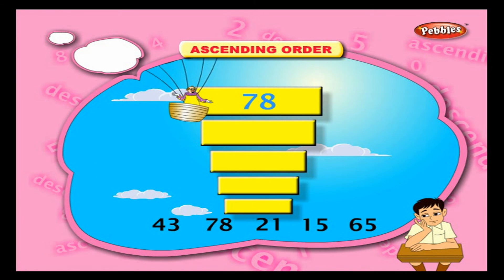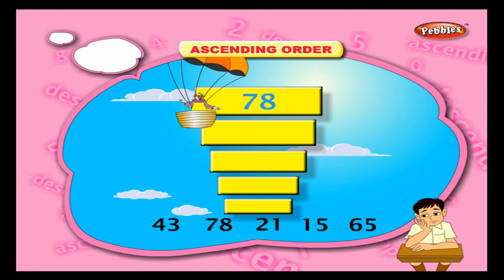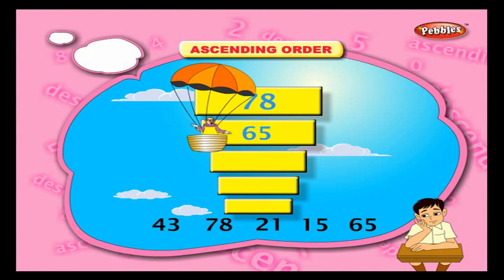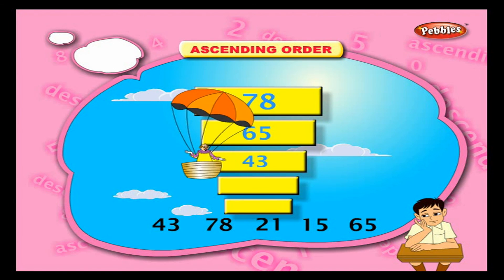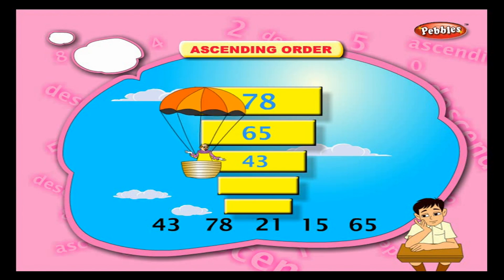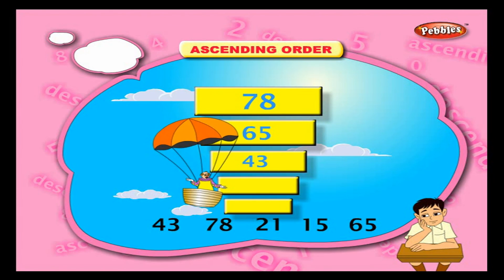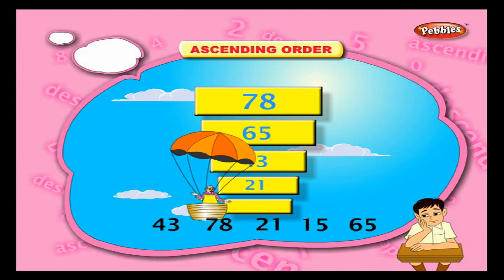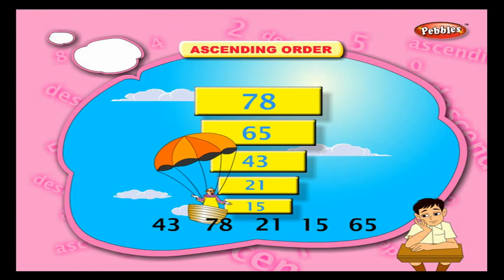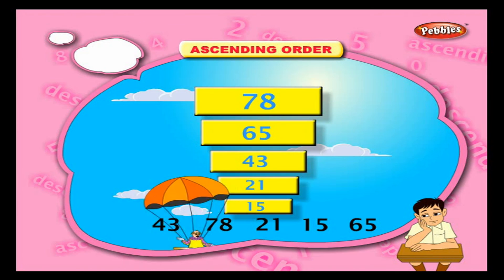78 is the greatest with seven tens and eight ones. Next comes 65 with six tens and five ones. Then 43 with four tens and three ones. Then 21 with two tens and one one. Finally, 15 with one ten and five ones.